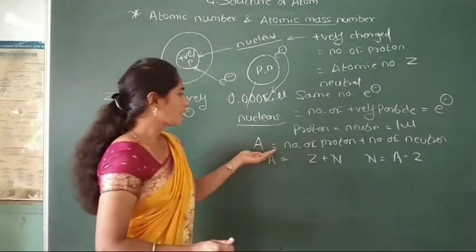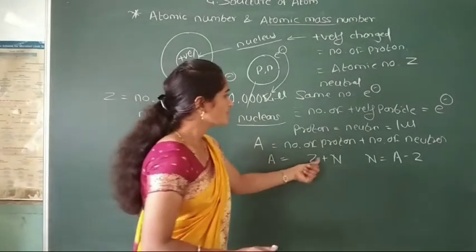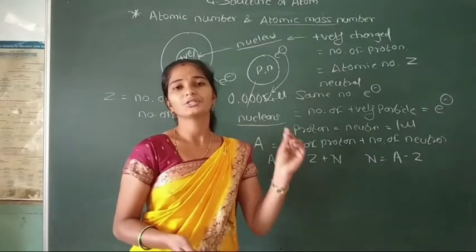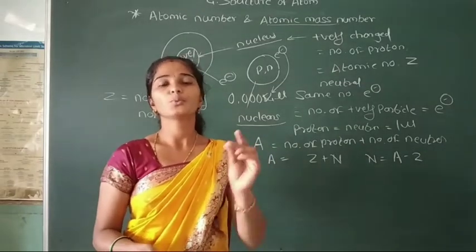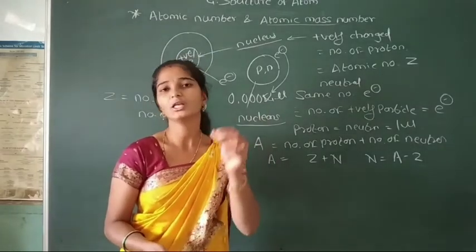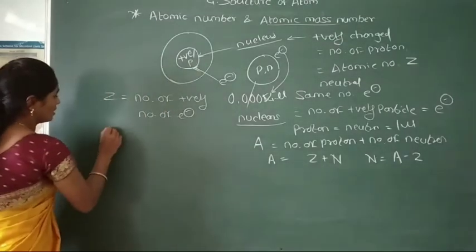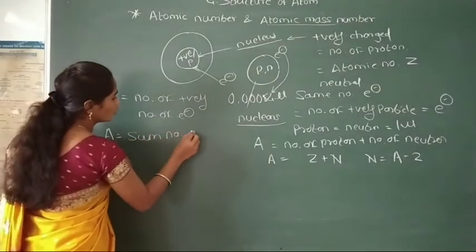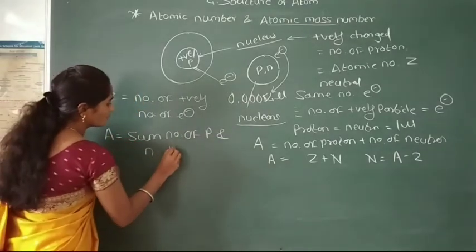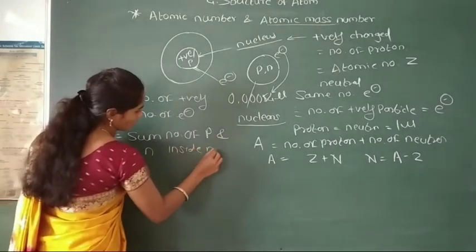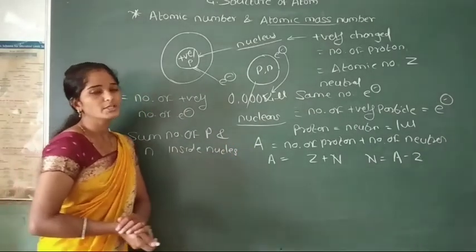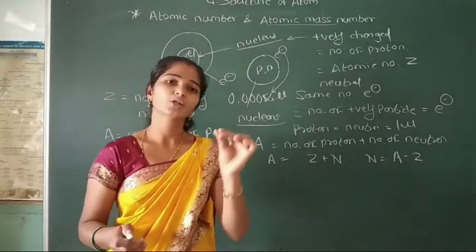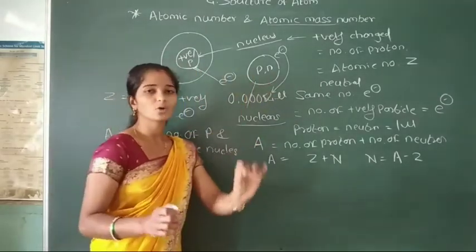This is the equation for atomic mass number: number of protons plus number of neutrons. The definition of atomic mass number is: it is defined as the sum of the number of protons and neutrons present in the nucleus — the nucleons of any element. This atomic mass number is also defined as the number of nucleons present inside the nucleus, because nucleons means number of protons and number of neutrons.